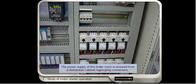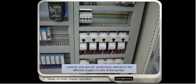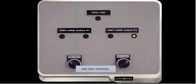The power supply of this boiler room is ensured from a distribution cabinet regrouping connectors, controls, and specific protections relevant to the different supply circuits of the pump and other elements.